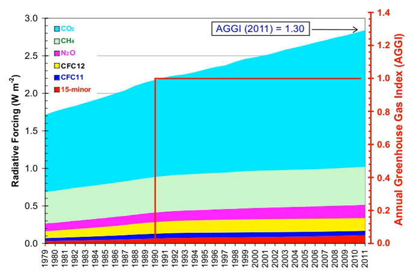Other removal processes include physical exchange between the atmosphere and other compartments of the planet, such as the mixing of atmospheric gases into the oceans, and chemical changes at the interface, such as CO2 being reduced by photosynthesis of plants and, after dissolving in the oceans, reacting to form carbonic acid and bicarbonate and carbonate ions.